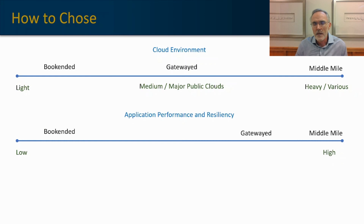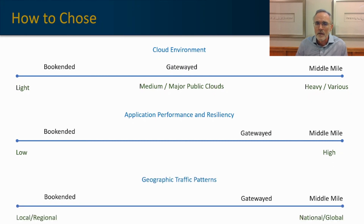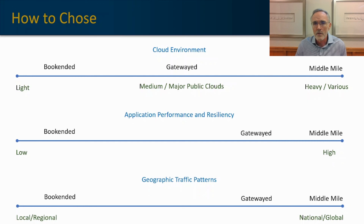Looking at application performance and resilience, if you have low requirements, bookended might be the more appropriate choice. With regard to geographic traffic patterns, if you have a local or regional environment, bookended might be more appropriate because you get less benefit from going through gateways or POPs. But if you have a national or global strategy, Gateway or Middle-Mile is probably a more valid option.